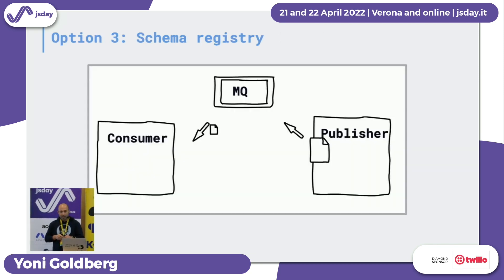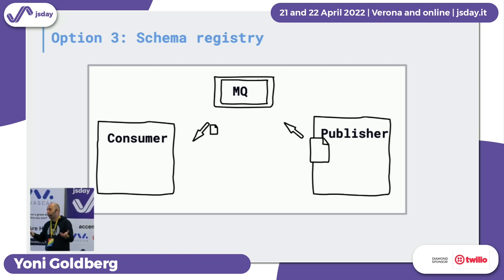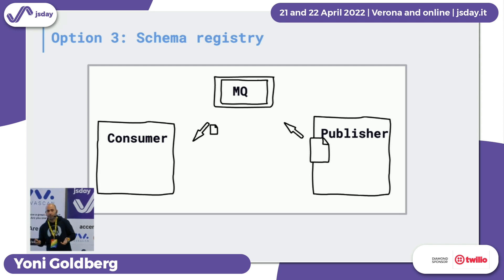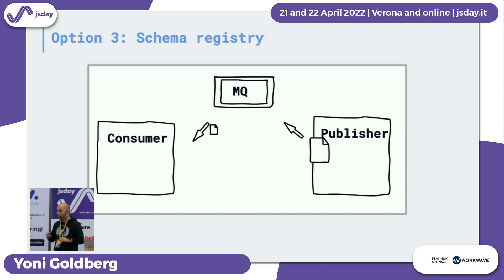The third option for contract testing is schema registry, a technique currently supported only by Kafka and Google PubSub. I'm putting it here as a reference because it's not yet supported by a lot of tooling, but I think it might be a great option very soon.